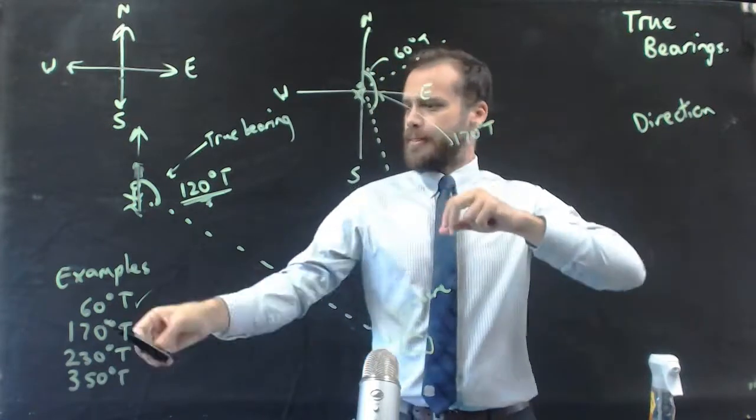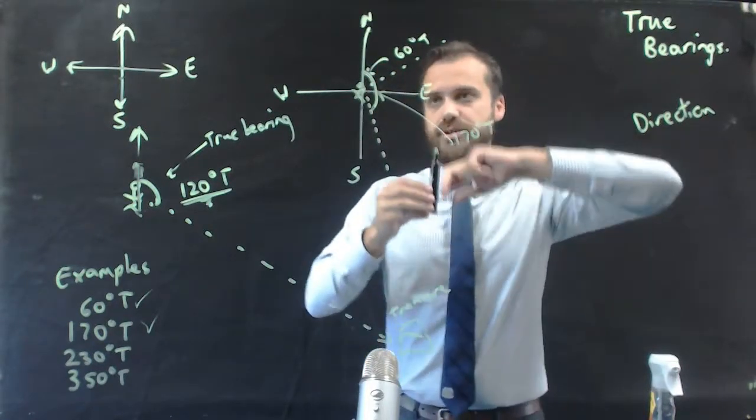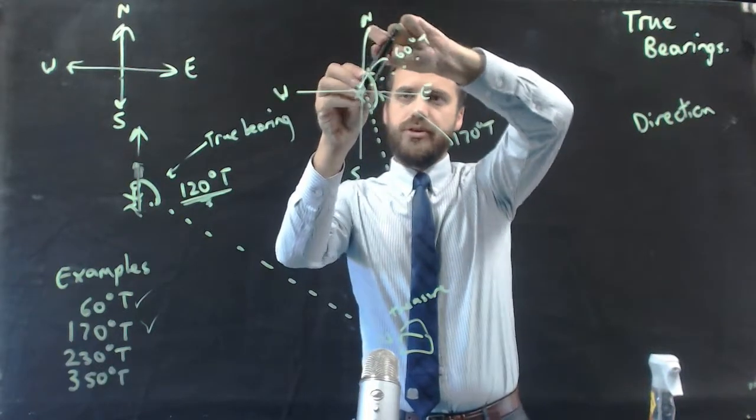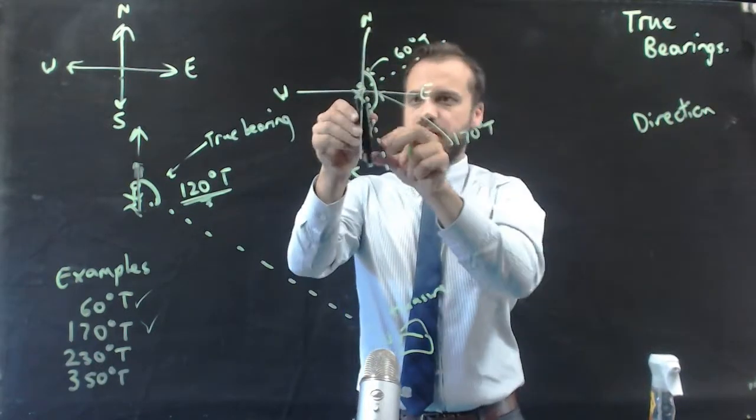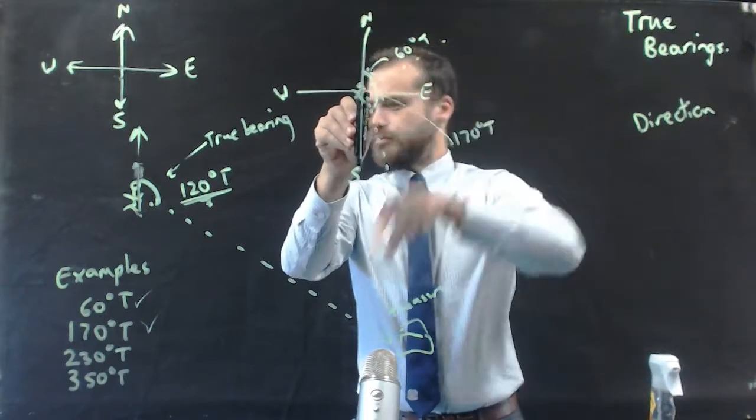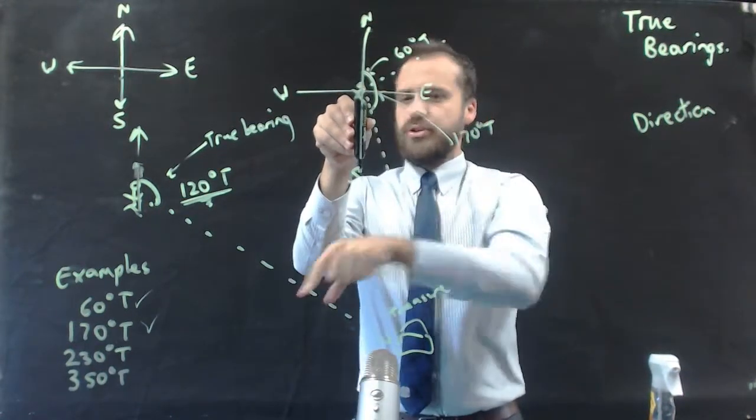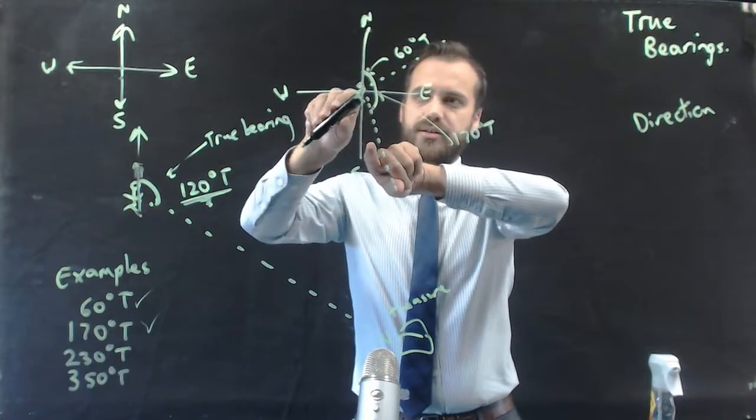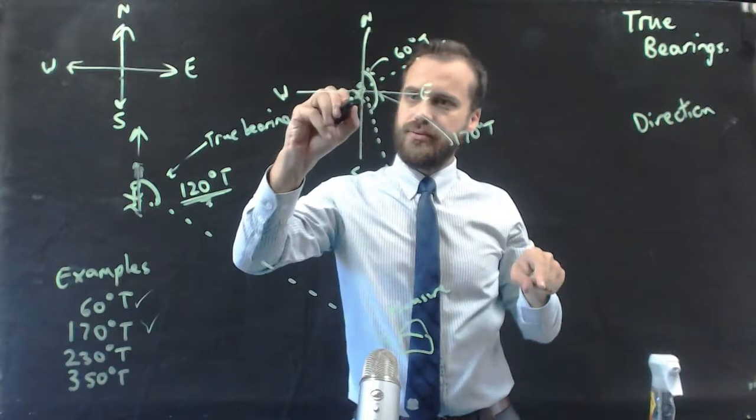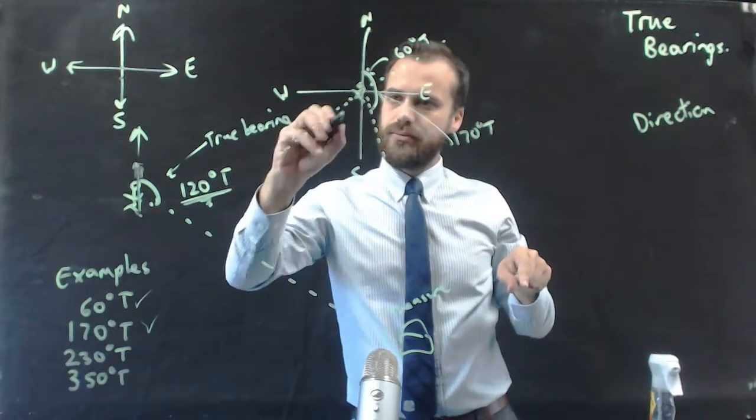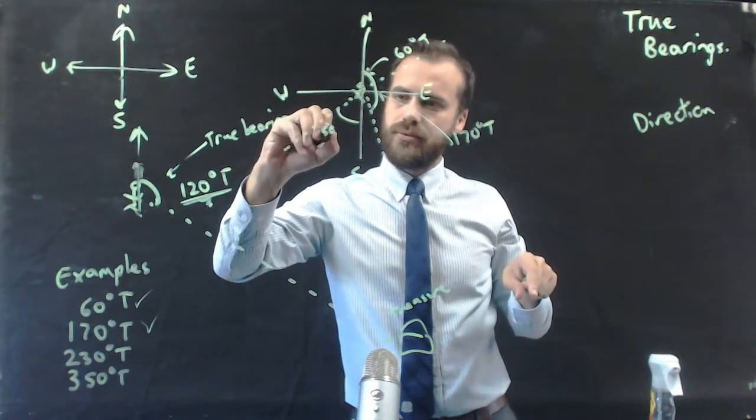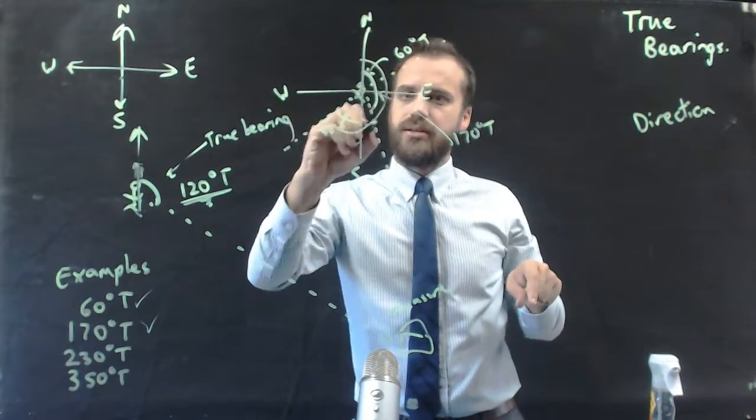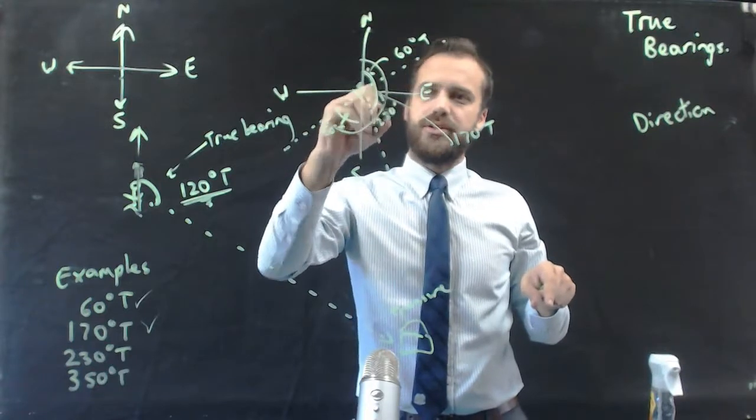Okay, what else have we got? 230 degrees true. Start facing north, rotate, past 180, 230. So, if it's 230 there, and I've already gone 180, I have to go another 50. That's 50 degrees in there, which means the whole bit there is 230 degrees true.